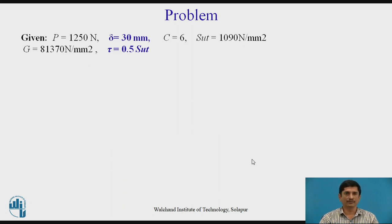If we check the problem statement, the data we have is: direct force P = 1250 Newton, maximum deflection = 30 mm, spring index = 6, SUT value = 1090 N/mm², G value = 81370 N/mm², and tau = 0.5 SUT. With the help of this data, we need to design the spring.